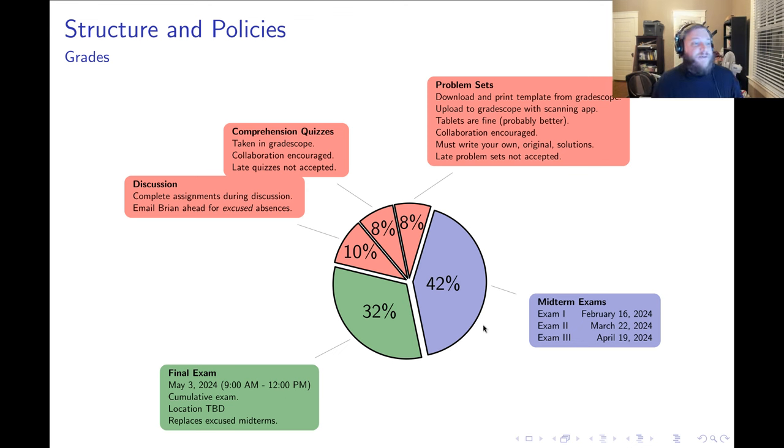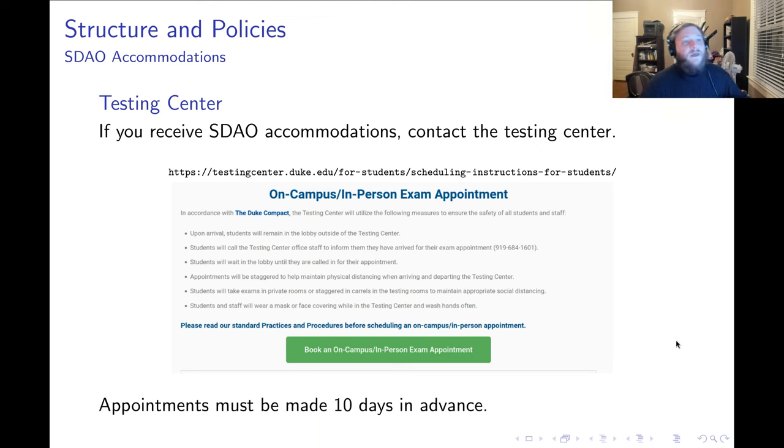Now, what are my policies in terms of absences? If you have an excused absence from a discussion, the protocol is that you should email me at bfitzpat at math.duke.edu. I will take care of your excused absence for a discussion by communicating with you. If you have an emergency and you have an excused absence for a midterm exam, then your final exam score will replace your excused midterm. If you receive SDAO accommodations, I want to know about that immediately, so please contact me. If that doesn't apply to you, then this slide is irrelevant.